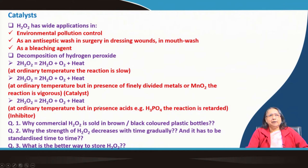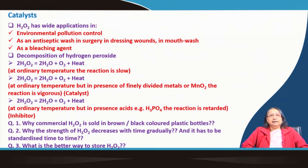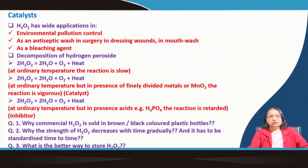At ordinary temperature, in the presence of phosphoric acid, the reaction is retarded. So phosphoric acid is also a catalyst — not only can a catalyst make a reaction faster, but it may make a reaction slower also. Then it is called an inhibitor or a negative catalyst. A catalyst is a substance which affects the rate of a reaction by its presence.